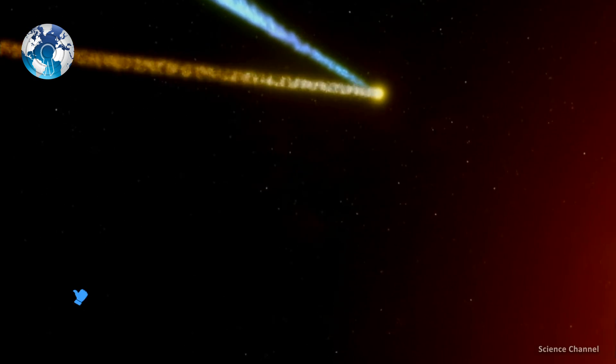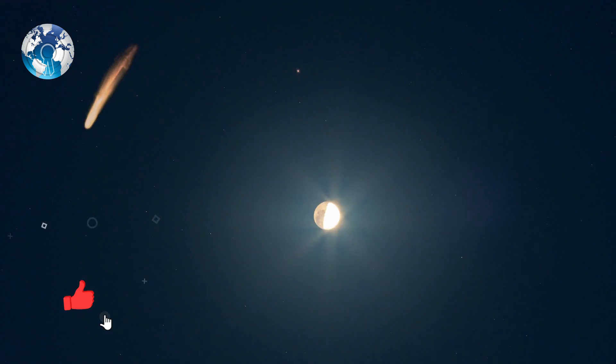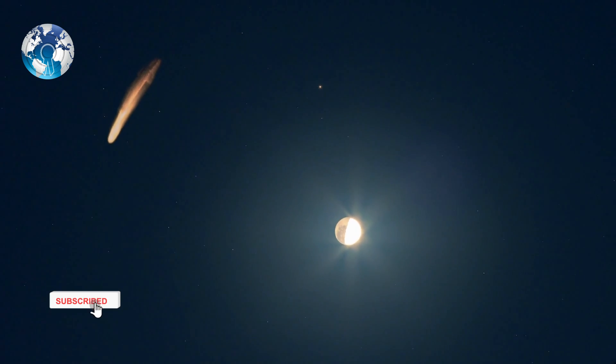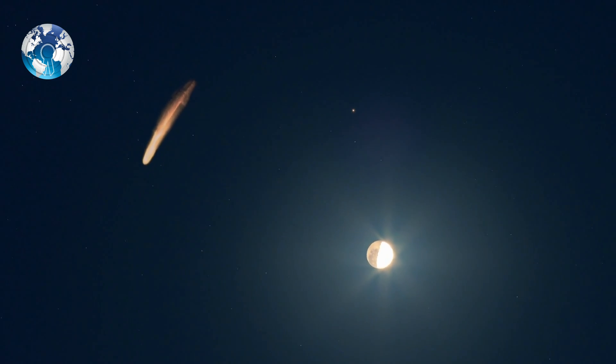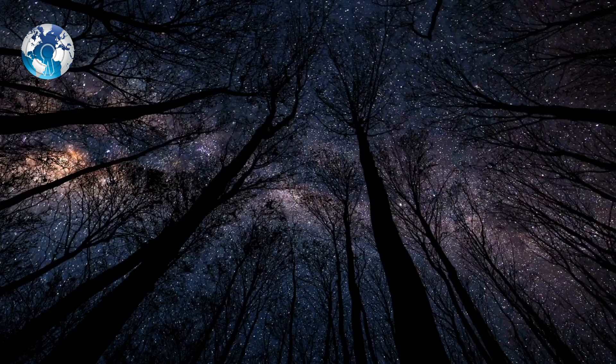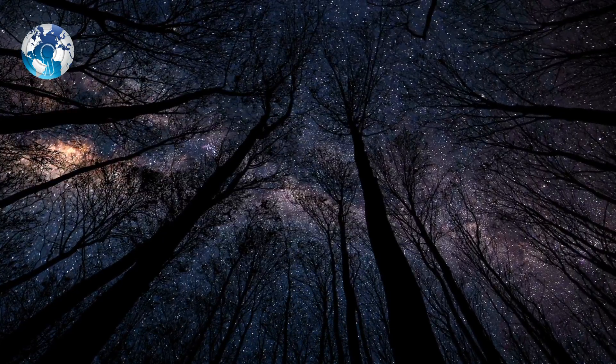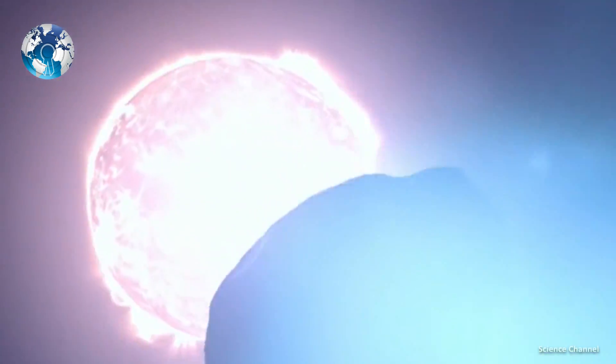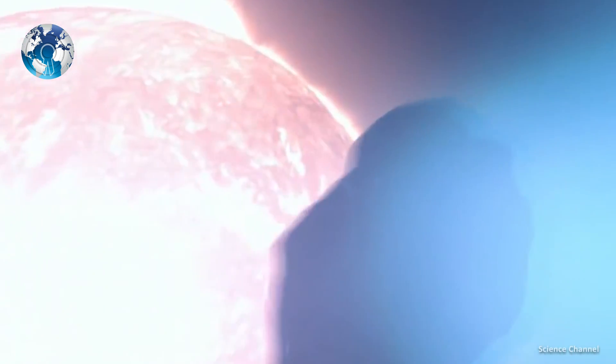Despite being one of the brightest comets to pass by the planet, Leonard might still be tricky to view, at least without a small telescope or even binoculars. After all, even at its closest point to Earth, C-2021 will still be more than 21 million miles away.